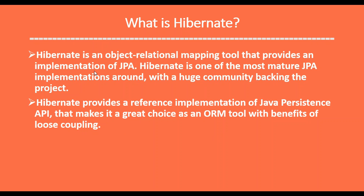Now let's see what is Hibernate. Hibernate is an Object Relational Mapping tool that provides an implementation of JPA. JPA is just a specification — it exposes interfaces with no underlying implementation. Hibernate is one of the implementations of JPA and is the most mature JPA implementation around, with a huge community backing the project. Hibernate provides a reference implementation of the persistence API.